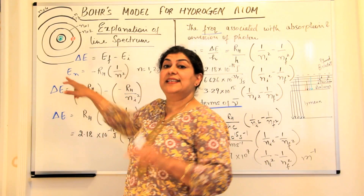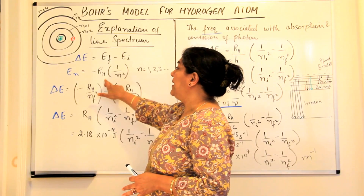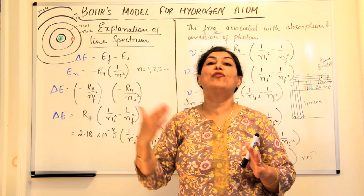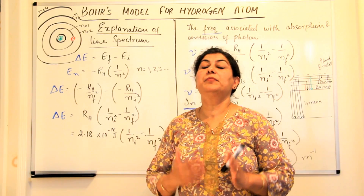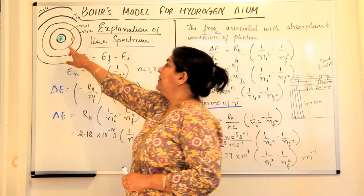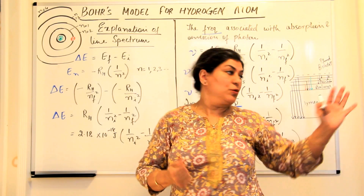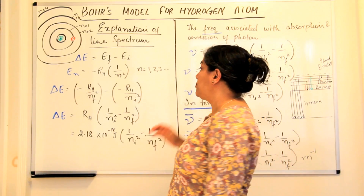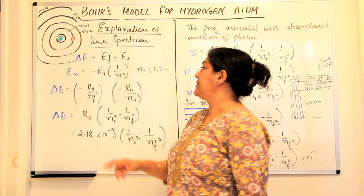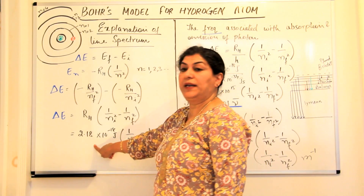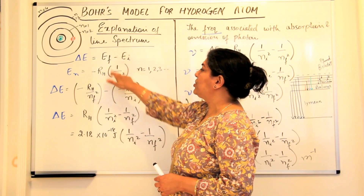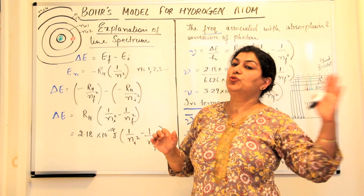We know that E_N is given by the formula: minus R_H multiplied by 1 upon N², where N is the principal quantum number or the number of the energy level. The level closest to the nucleus is N = 1, then N = 2, then N = 3, and so on. R_H is Rydberg's constant, with a value of 2.18 × 10⁻¹⁸ joules.